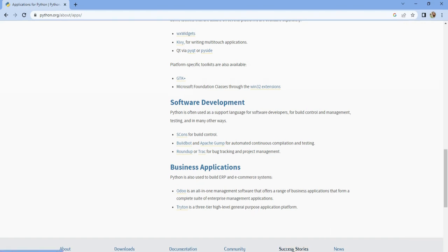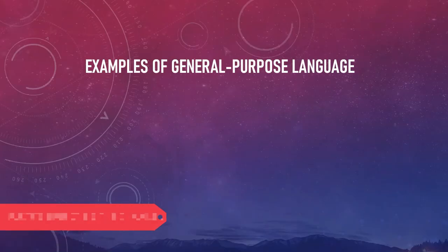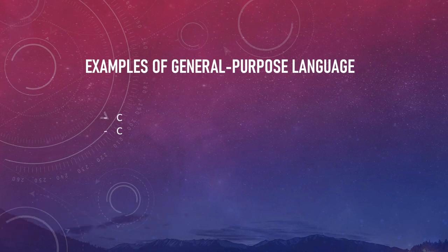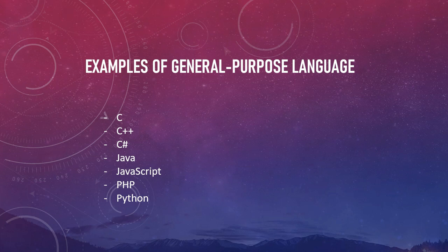Any language which meets this criteria is called a general purpose language. Examples of general purpose languages include: C, C++, C#, Java, JavaScript, PHP, Python, and Ruby. These are all good examples of general purpose languages.